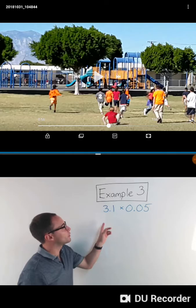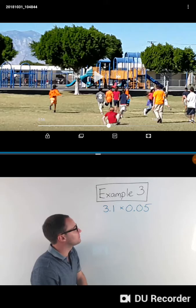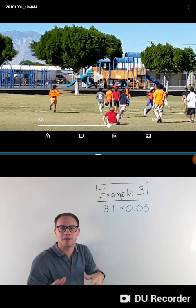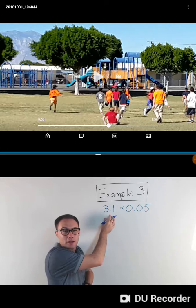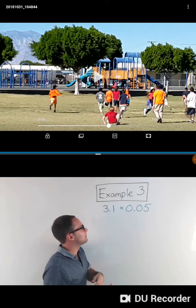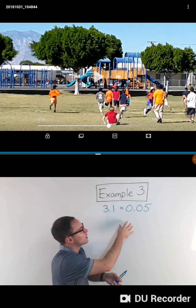3.1 times 0.05. Now if you remember at the beginning of the video, I said when you're multiplying with decimals, pretend the decimal points aren't there and set up the problem like that. So I'm not gonna think of this as 3.1, I'm gonna think of it as 31 times 005. Now there's a couple of ways I could put the 31 on top, or I could put the 005 on top.